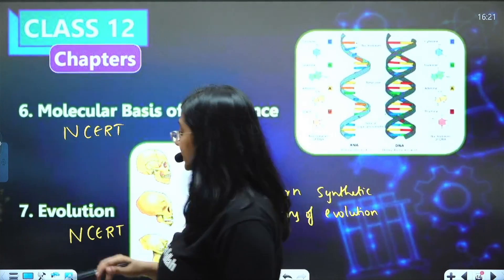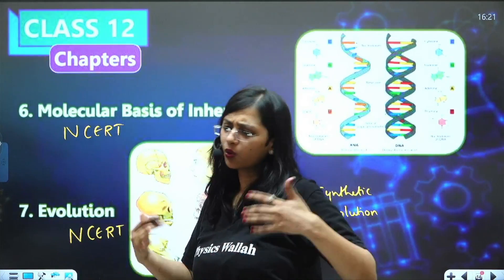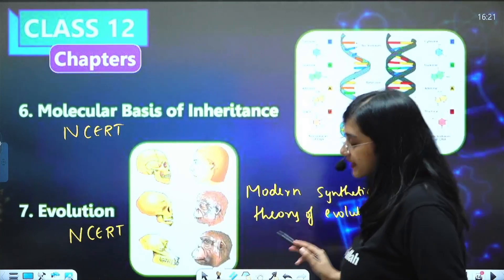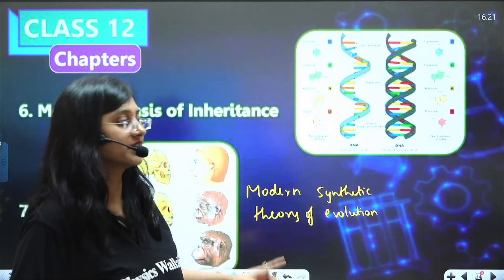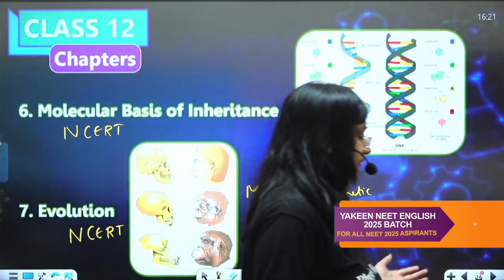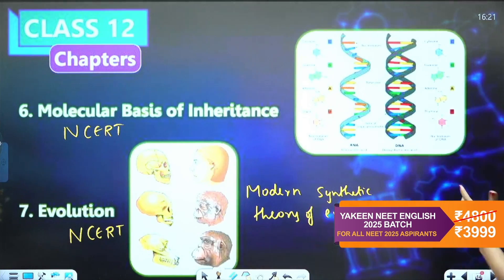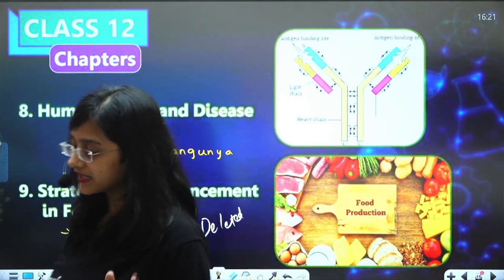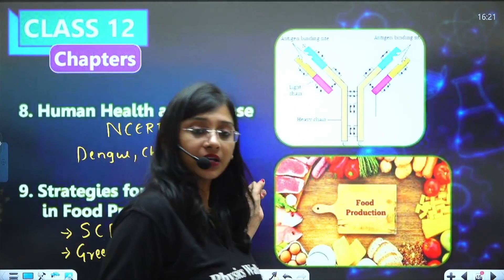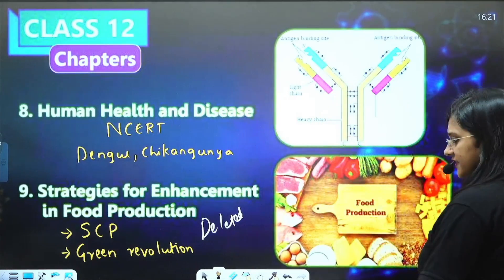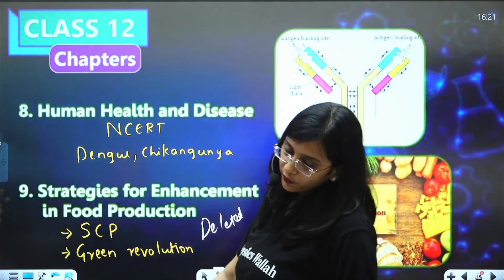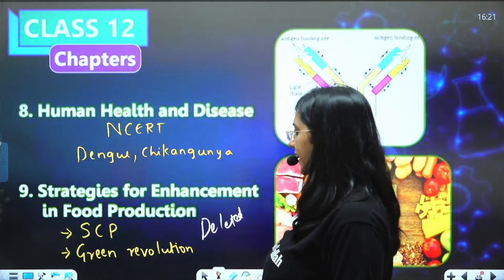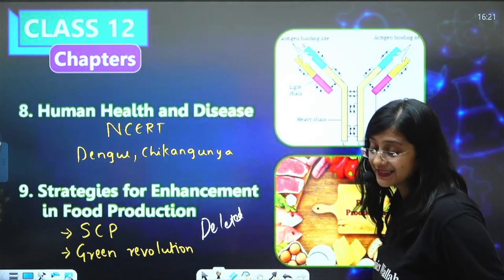Molecular Basis of Inheritance — any NCERT. For Evolution, along with old or new NCERT, study an extra concept called the Modern Synthetic Theory of Evolution, which is mentioned in the NTA syllabus. It includes Neo-Darwinism and is a combination of different theories. For Human Health and Disease, any NCERT works, but additionally study dengue and chikungunya — how they spread, what type of disease they are, and their major symptoms.